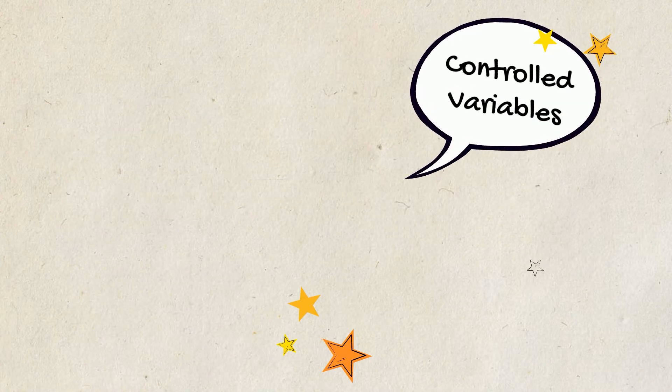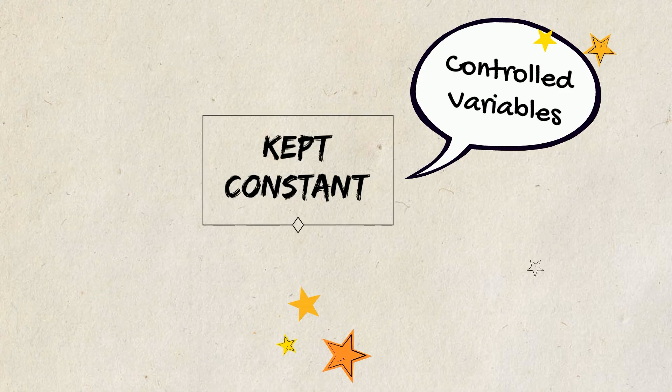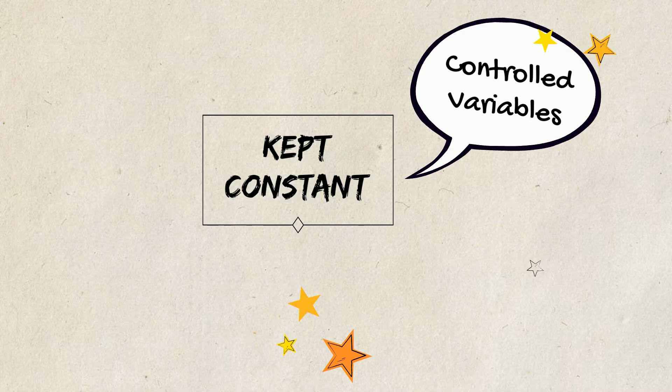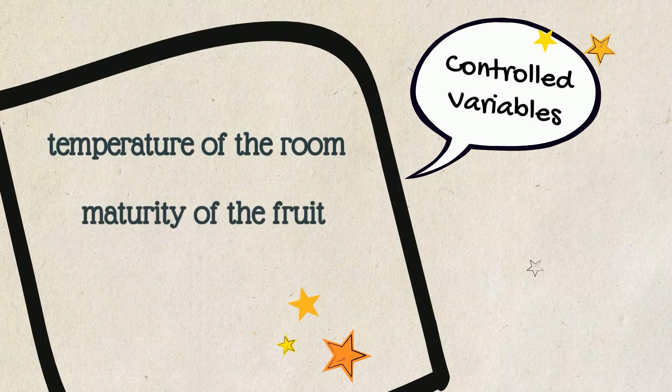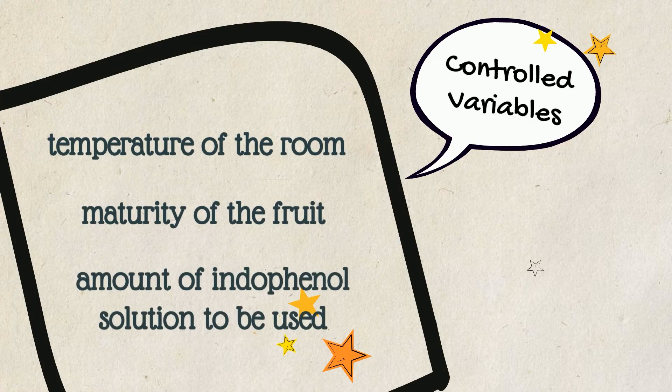Controlled variables are the ones that are kept constant in the experiment to avoid other factors affecting the dependent variable. When experimenting on the amount of vitamin C in our selected citrus fruits, we keep some elements constant, like temperature of the room, maturity of the fruit, amount of indophenol solution to be used, among others.